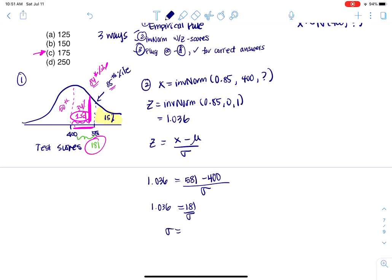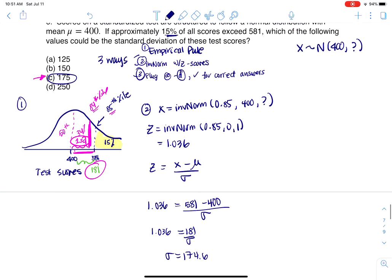I get that sigma is 174.6. And that's pretty close to 175. All right, so that's a third way to do this, a third way, excuse me, second way. Now let's take a look at the third way.